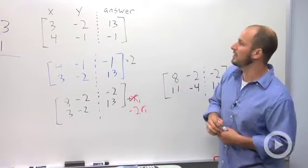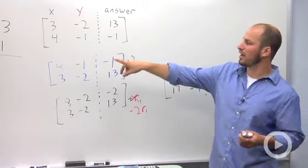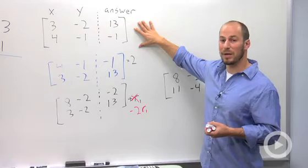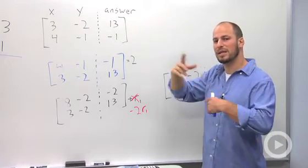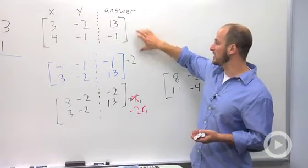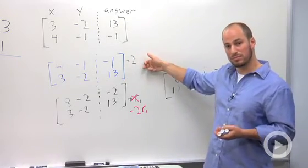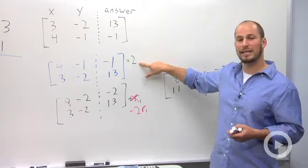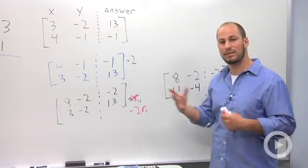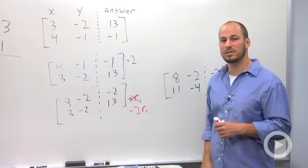So in recap, we took our equation, system of equations, and turned it into a matrix. And then from there, there's a number of matrix operations we can use. They're called row operations. We can switch the order of our rows, we can multiply by a scalar, or we can add rows together, or add multiples of rows as well.